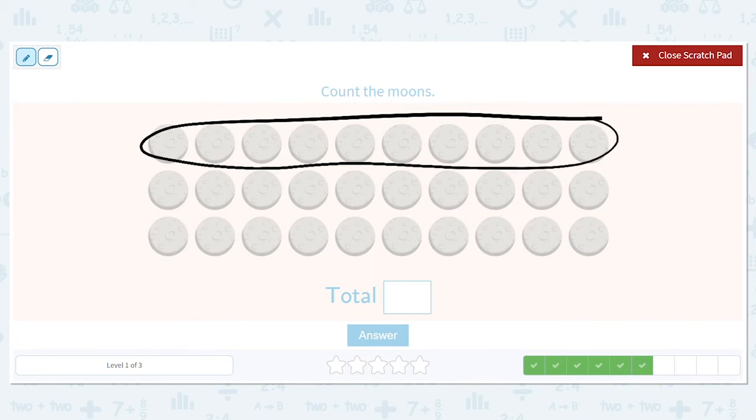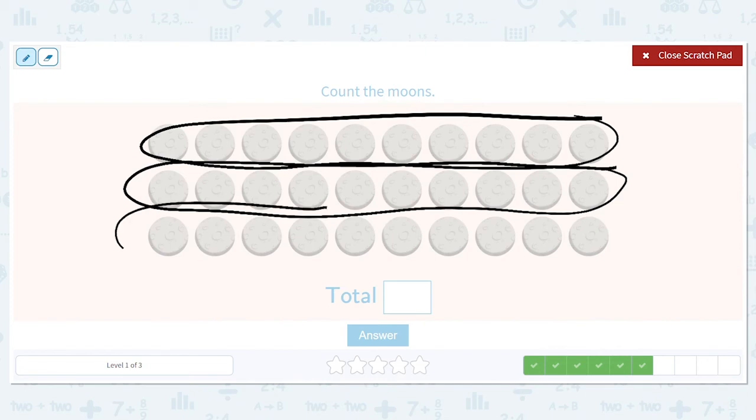One row of 10. Two rows of 10. Three rows of 10. So how many total moons do we have? 10, 20, 30.